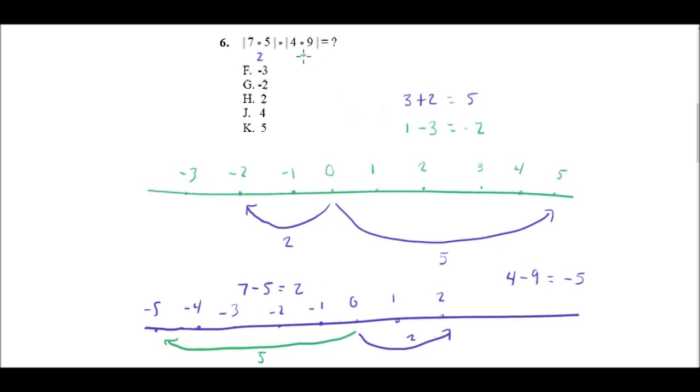So I'll draw in my little 5 here. And then I can do the subtraction that's outside of the absolute value bar. So 2 minus 5, and what does that equal? Well, 2 minus 5 equals negative 3, and that is F.